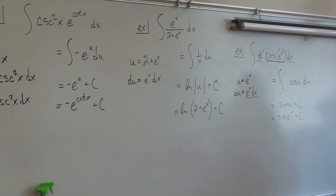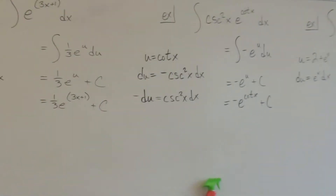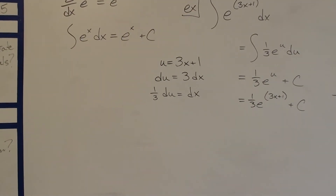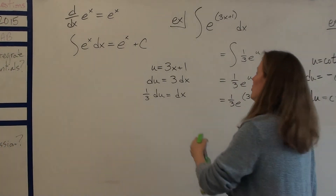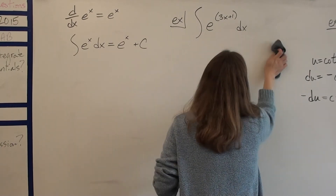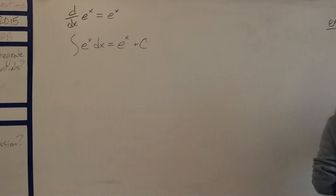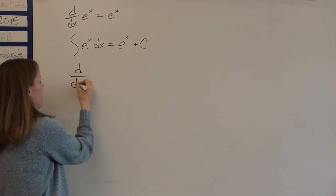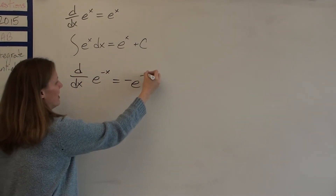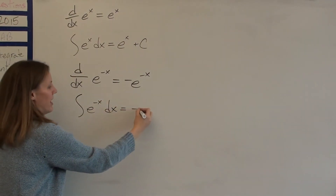If you had e to the negative x, what would the derivative of that be? As a small time saver: the derivative of e to the x is e to the x, and the derivative of e to the negative x is negative e to the negative x. So the integral of e to the negative x is also negative e to the negative x.